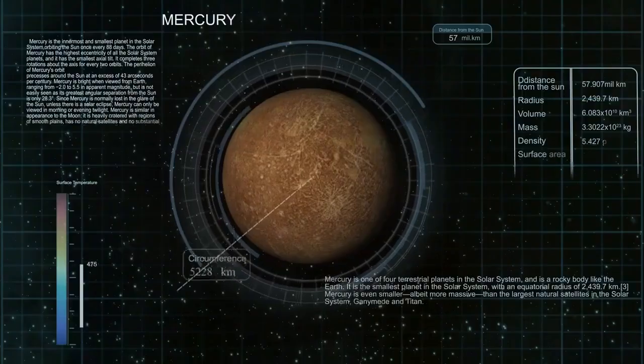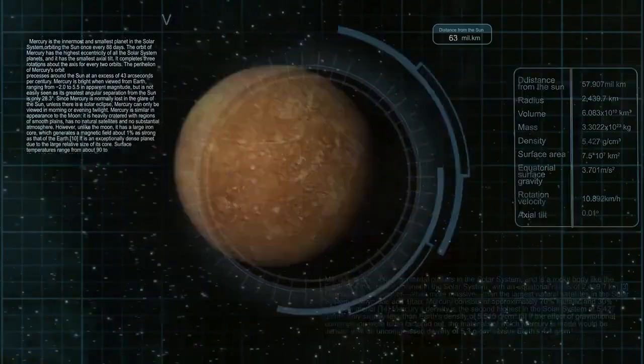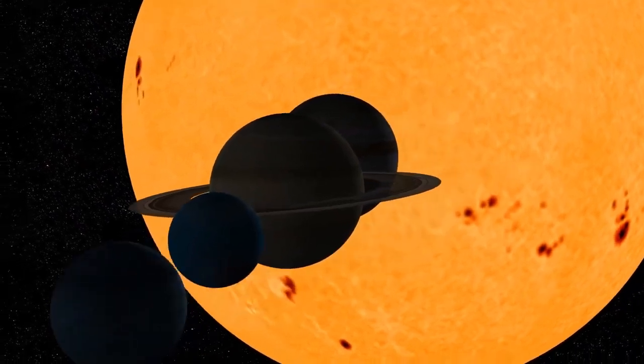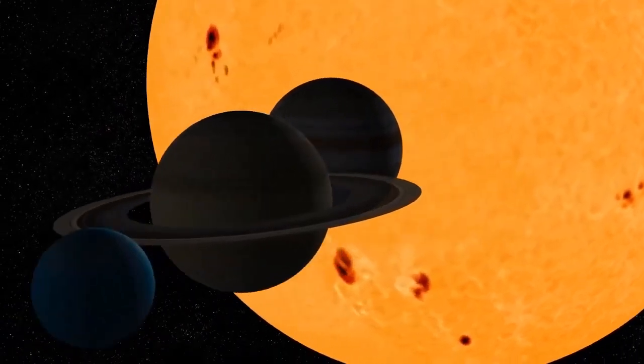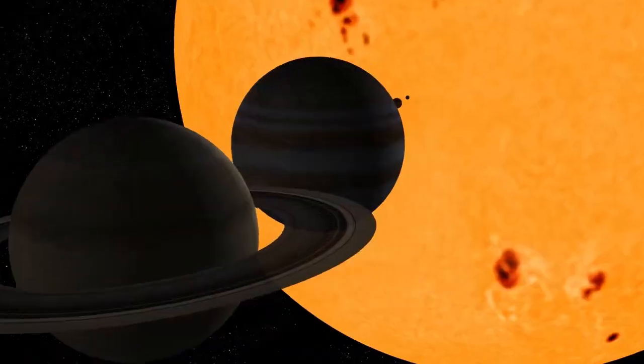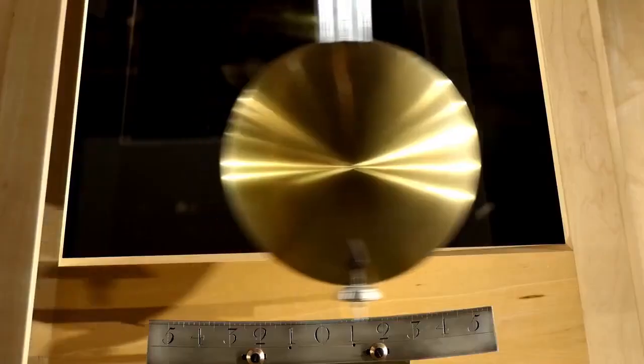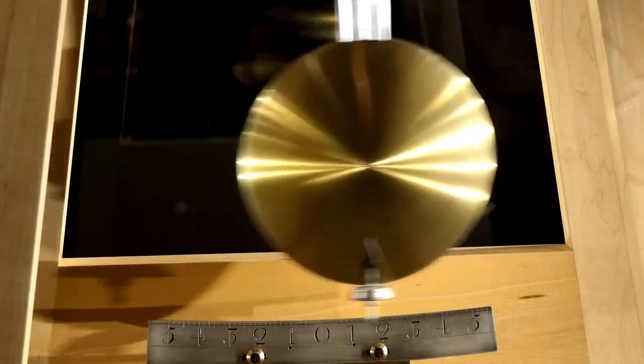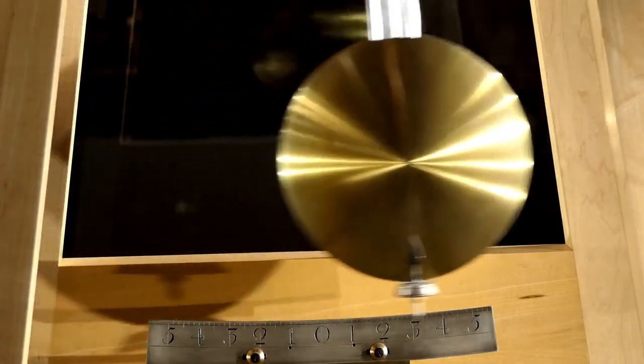Over a decade, the data transmitted by the Voyagers have profoundly shaped our understanding of the outer solar system, earning their place in textbooks and media alike. As a unique touch, each spacecraft carries a golden record time capsule of Earth's sounds and music intended to communicate with potential extraterrestrial life.